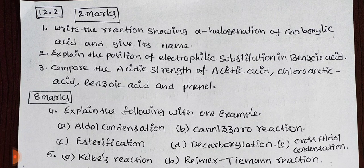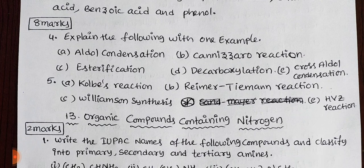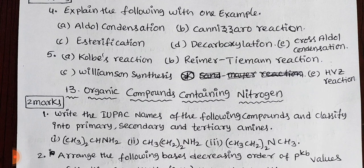Ketones and carboxylic acids — 2 marks each. The 8-mark questions are very important. First: aldol condensation, Cannizzaro reaction, esterification, and decarboxylation — 5 marks. Cross-aldol condensation — 4 to 5 marks. Next: Kolbe reaction, Reimer-Tiemann reaction, and Williamson synthesis — 4 to 5 marks. Also HVZ reaction — important.